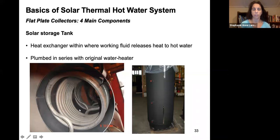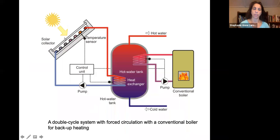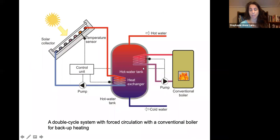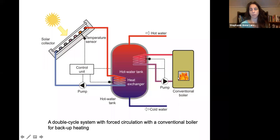Finally, the solar storage tank is where the working fluid releases heat to the hot water supply. It is often plumbed in series with the original hot water heater. You might have two separate tanks or one combined tank with a conventional boiler, so the solar system heats the water most of the way and the boiler only needs to work a little to reach the desired temperature for showers.